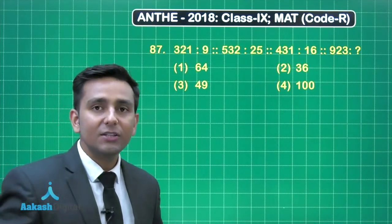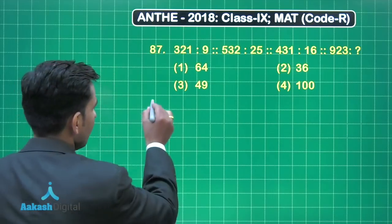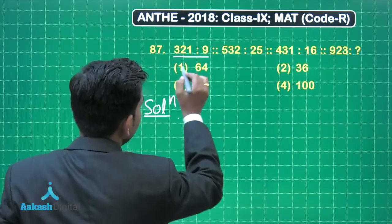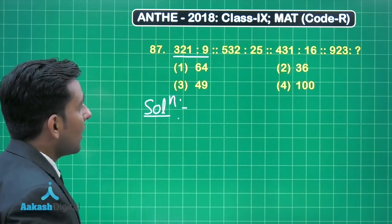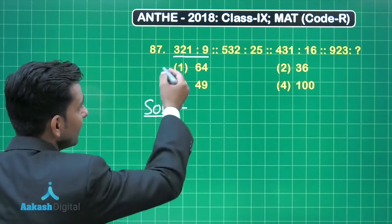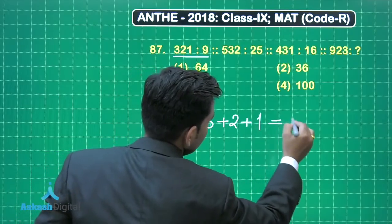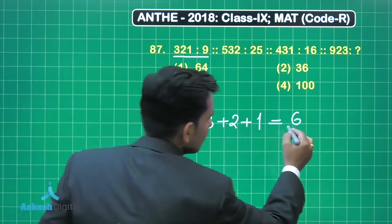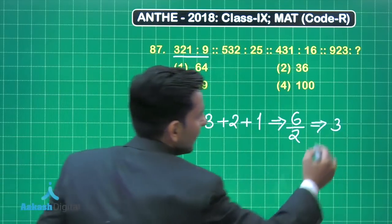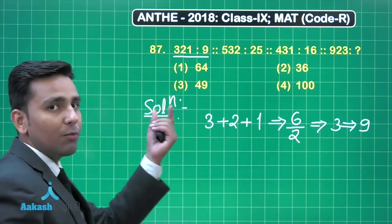Now friends, let's discuss question number 87. This question is based on analogy test. First we will find the relation between the first group of numbers 321 and 9. So when we add the digits of this number we are obtaining 3 plus 2 plus 1, which is equal to 6. And half of 6 we are getting 3, and this number 9 is the square of 3. So that is the relation between 321 and 9.